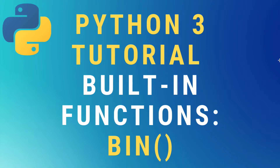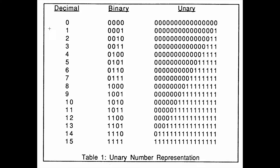Today we're going to learn about the Python 3 bin, or binary, built-in function. Before we open the shell, let's take a look at the binary table — a quick reminder: zero is 0, one is 1, two is 10, three is 11, four is 100, etc. Now let's open the shell and start exploring.